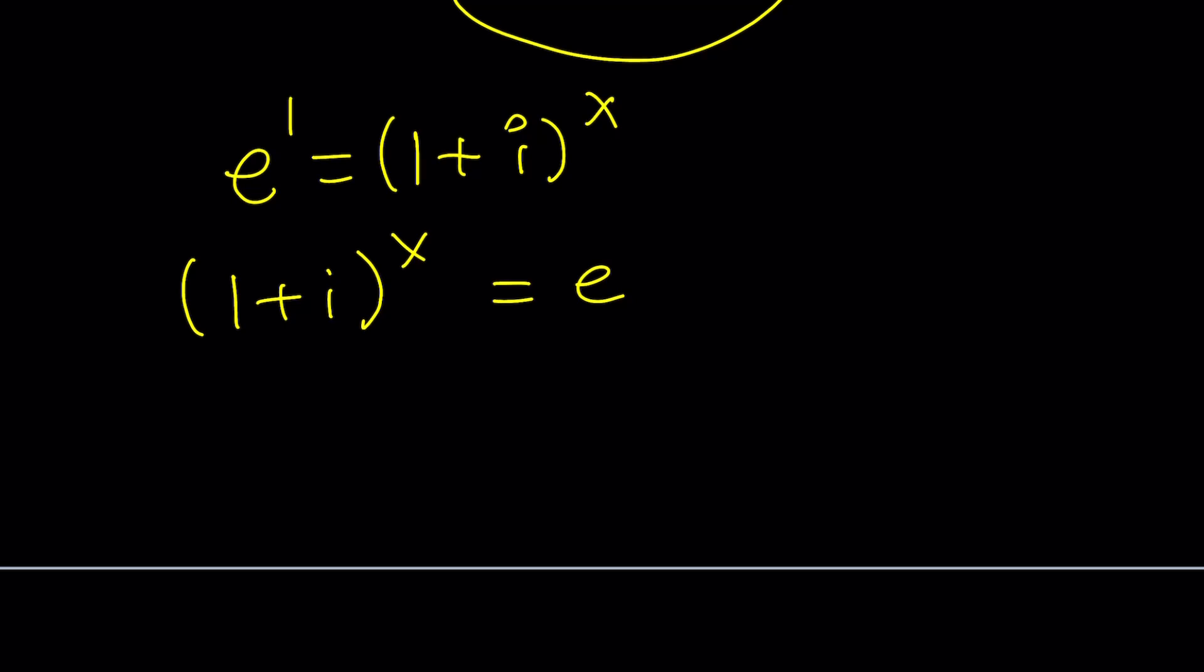Now, to be able to solve this problem, I have e on the right-hand side. I do need to have a power of e on the left-hand side. So let's go ahead and use the polar form with Euler's formula. Again, 1+i, we already know that, it is √2·e^(iπ/4). Now I'm going to raise this to the power x.